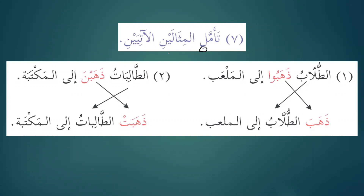How is mithalayni mansoob? Because mithalayni — the case ending for the dual comes with long vowels: mithalayni, mithalayni, mithalayni. Similarly atiyayni is the dual of atiya. Reflect on the following examples — both are mansoob because fil al-amr always has a verb and a subject. Every command consists of a doer, so whenever you make a command the noun after it is mansoob.